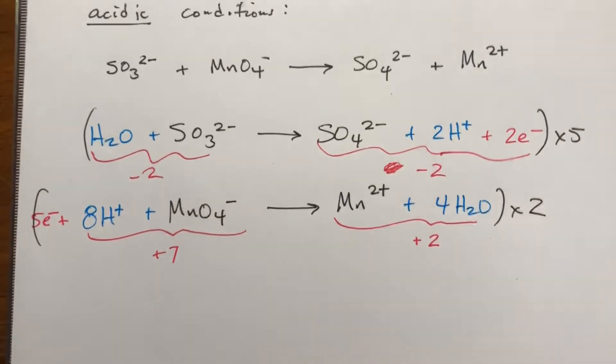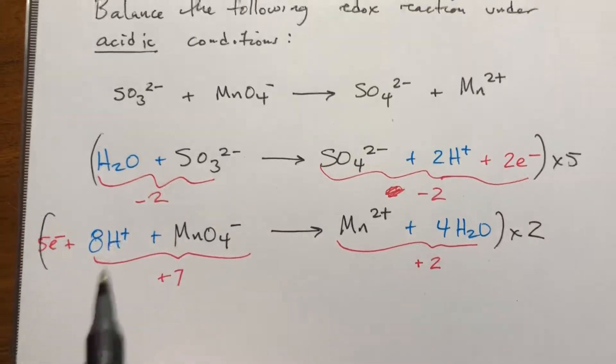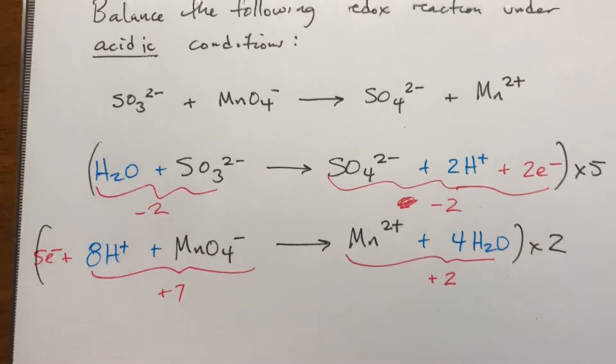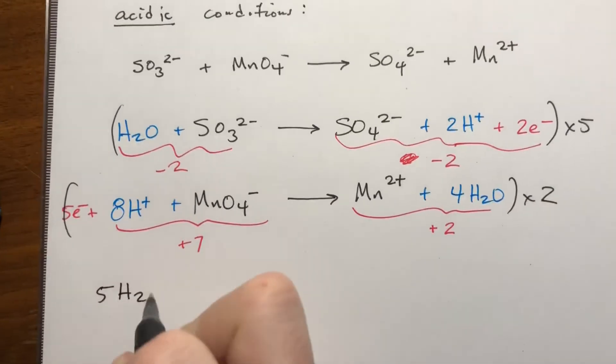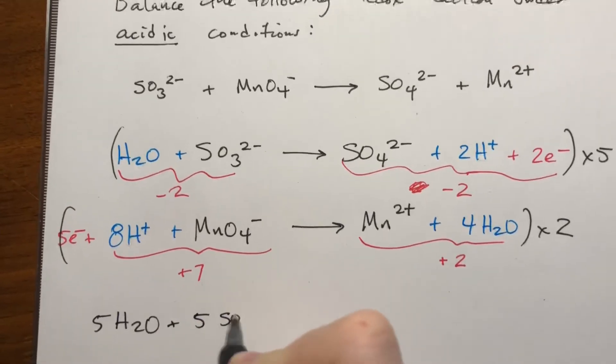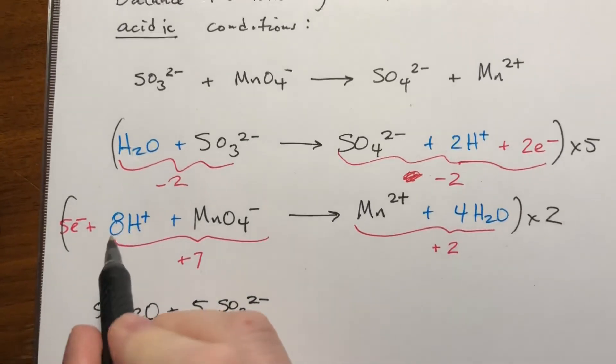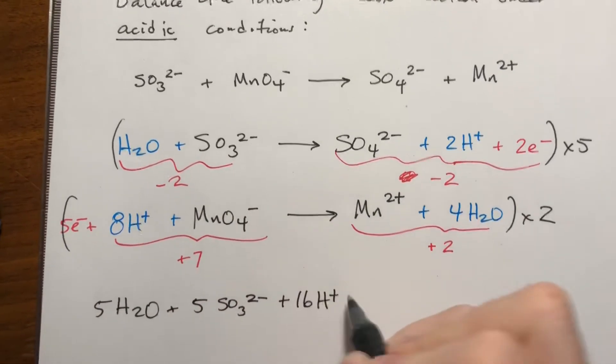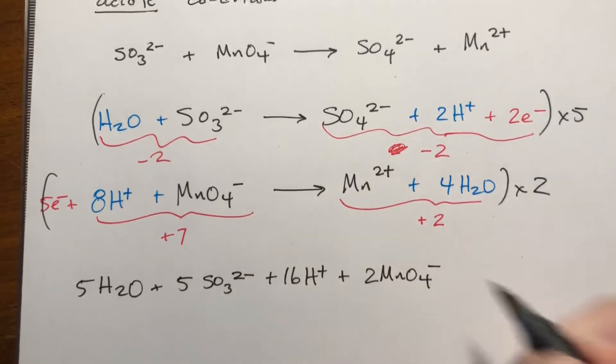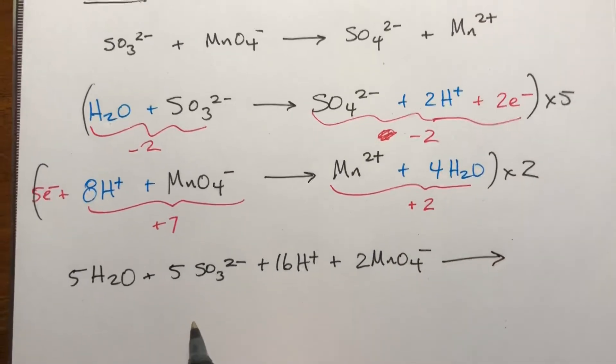Which means our electrons will cancel when we add this. We have ten electrons on the left and ten electrons on the right. Now what we're gonna do is write down all of the reactants scaled up by these numbers on one side, and all the products scaled up on the other side, and cancel out what we can. So five waters from this reaction, because everything's times five, plus five times SO3 2-. Then we're also doing this reaction, everything's been doubled, so that's two times eight would be 16 H pluses, plus two times MnO4-. All of this together is our reactants.